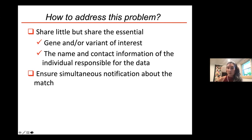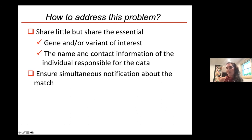We also ensured in both GeneMatcher and VariantMatcher that notification is simultaneous — all parties involved in a match receive the same information at the same time. This was very important because researchers, even 10 years later, are still concerned about being scooped — about losing their data once shared and losing the opportunity to write the paper or the grant. That formula worked very well for GeneMatcher, and we decided to apply it to VariantMatcher.